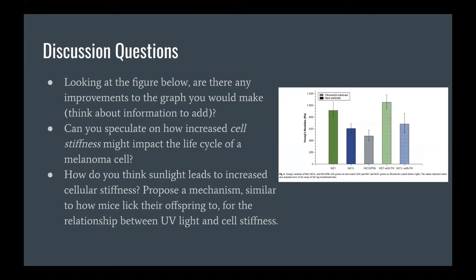Moving to the discussion activities: Figure 2 was probably the most important figure and the foundational piece of the paper. The first discussion question asks what changes or improvements could be made to that graph. The second asks how cell stiffness might impact the life cycle of a melanoma cell. The third asks participants to propose a mechanism for how sunlight could lead to increased cellular stiffness.